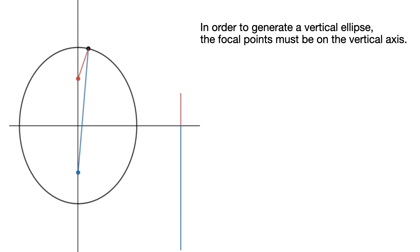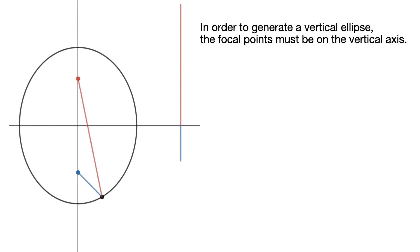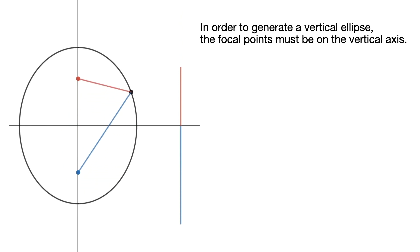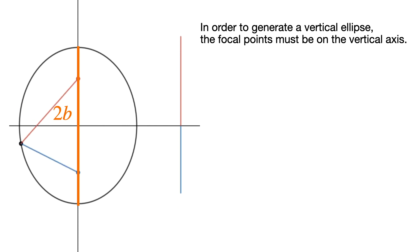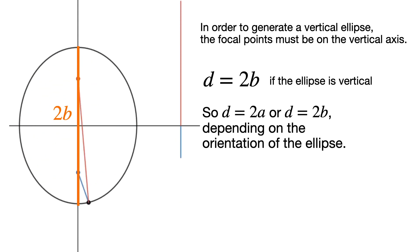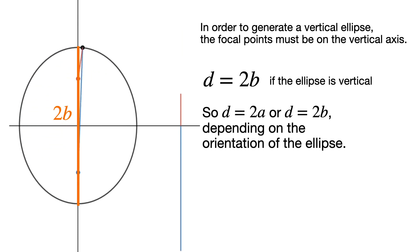However, if it's a vertical ellipse, the logic is reversed because the focal points lie on the vertical axis. In that case the total span across the vertical axis is 2b, so the combined distances equal 2b. Therefore d equals 2b for a vertical ellipse — it's either 2a or 2b depending on the orientation.